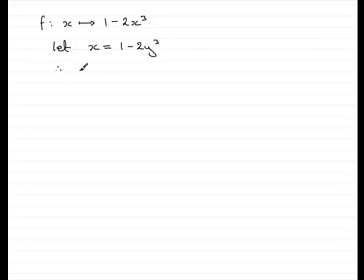So if we do that, I'd add 2y cubed to both sides, so we'd have 2y cubed, and then I'd also take x from both sides, so it would have 1 minus x.